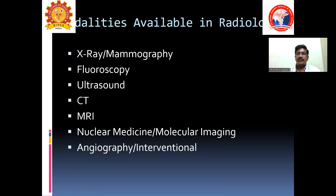Let us see what modalities are available in the radiology department. When you are working in the corridor of the radiology department, you will see name boards hanging there, which tell you what type of instrument is available and what cases you can refer. First you will see x-ray: 300mA, 500mA, 600mA, 800mA, IATV, fluoroscopy, low x-ray dose, and mammography. All these use ionizing x-ray radiations.